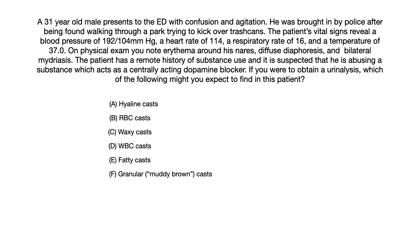A. Hyaline casts. B. RBC casts. C. Waxy casts. D. WBC casts. E. Fatty casts. Or F. Granular, also known as muddy brown casts. Pause the video if you want some time to think about this on your own before I start going through the question.